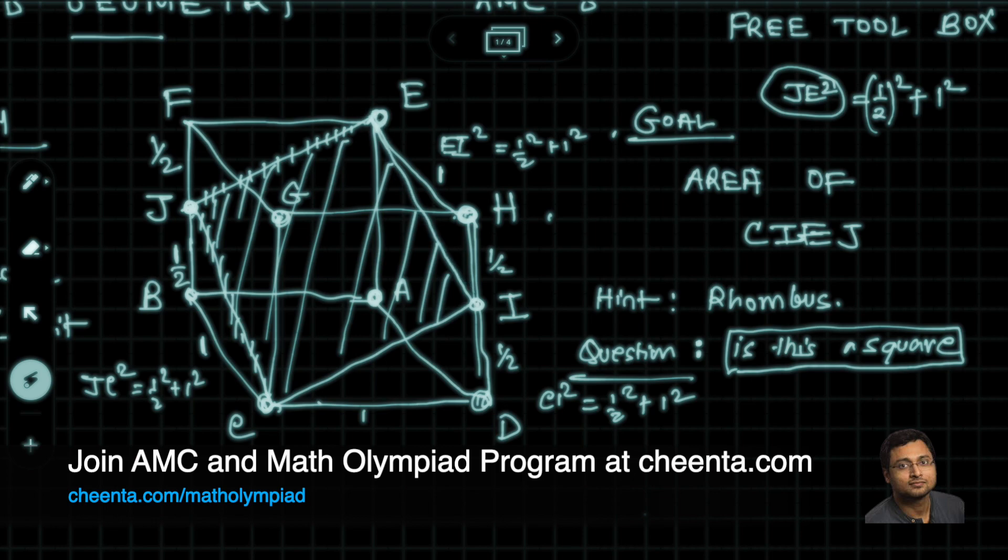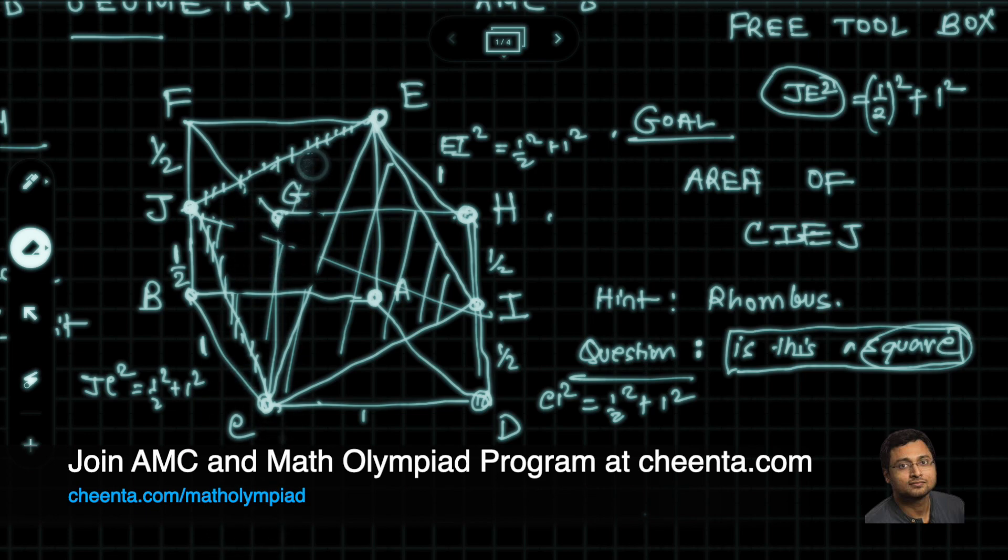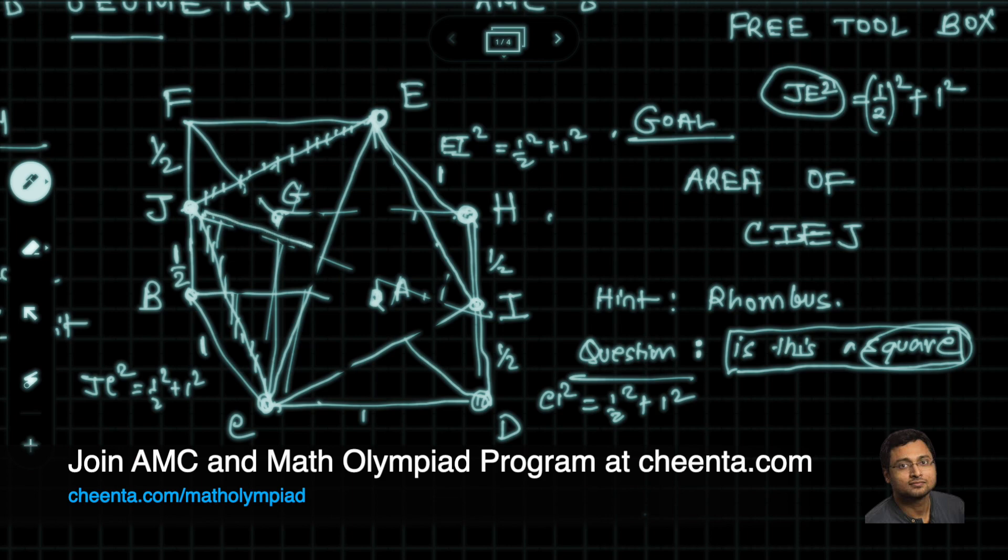So we just showed that all the four sides of this quadrilateral are equal, hence it's a rhombus. The question whether it's a square is still open, so I am hoping that you are thinking about it. Now let's join EC and JI. In fact, I will erase some of the other shadings to make this picture look a little bit better.